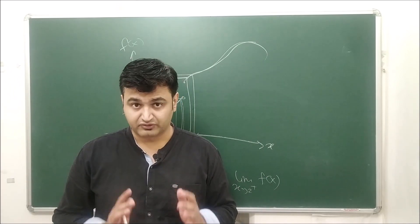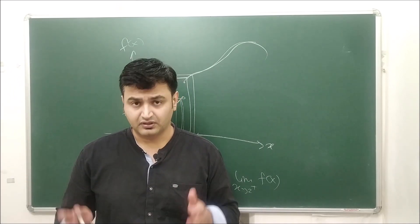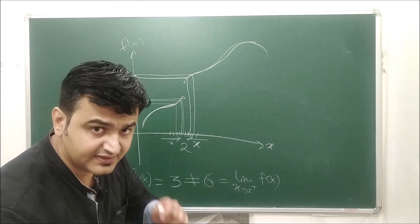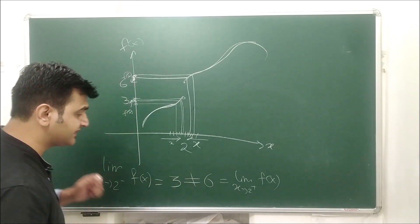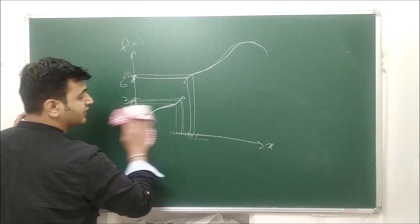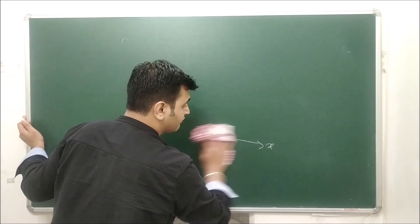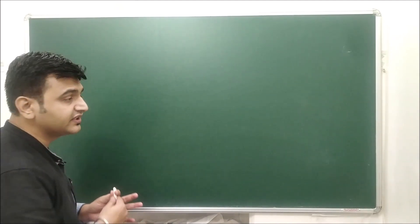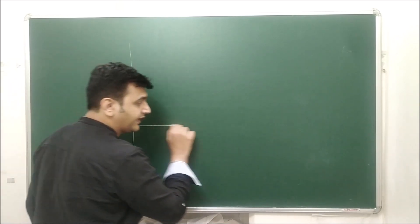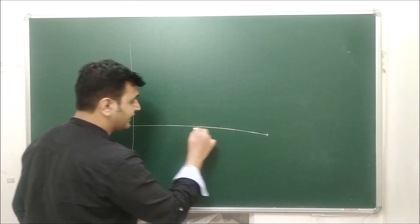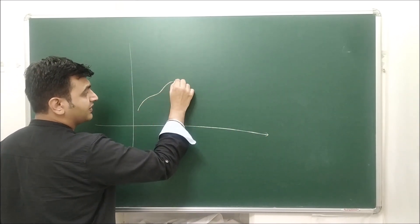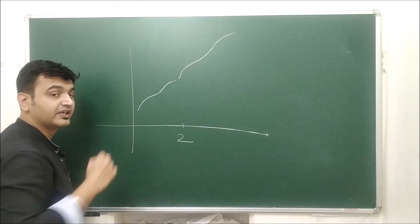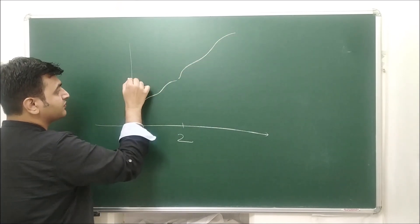Whenever a question is about continuity, first check the limit. As soon as the limit does not exist, you can say the function is not continuous. But is the existence of the limit a sufficient condition? No — it might happen that the limit exists but the function is still not continuous.